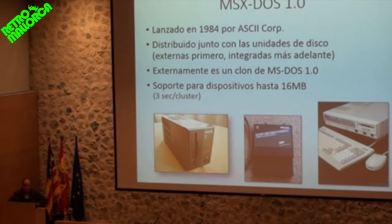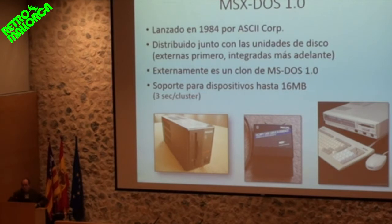Why was it limited to 16MB? Because MSX-DOS 2.0 is so aggressive that when it accesses a disk, it loads the entire FAT — the entire file allocation table — into memory at once. This consumed memory in a massive way, and there was only one and a half kilobytes for the FAT per disk unit. This means three sectors per cluster, which if you do the math gives you a maximum storage size of 16 megabytes.